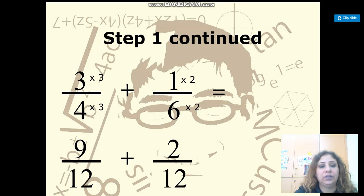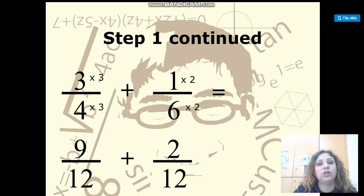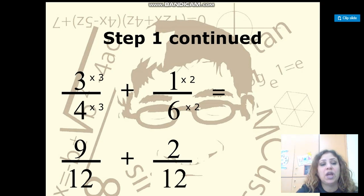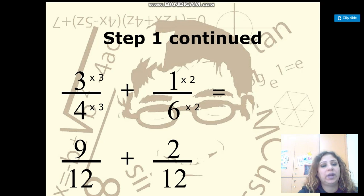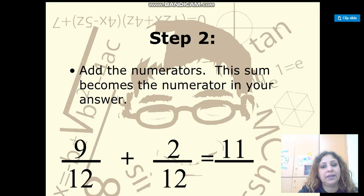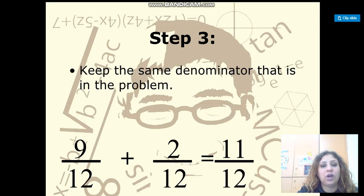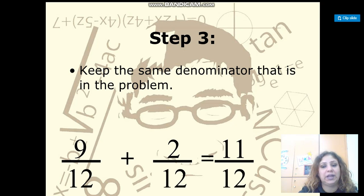Then you need to change the denominator to 12. I can change 4 to 12 by multiplying by 3, and I have to do the same thing to the numerator and multiply it by 3. I get the equivalent fraction 9 over 12. The 6 also will be changed to 12 by multiplying the denominator by 2 and the numerator by 2 as well. Then I will add the top numbers and keep the denominator the same. The answer is 11 over 12.